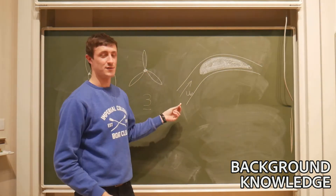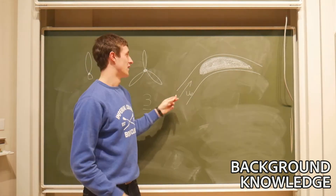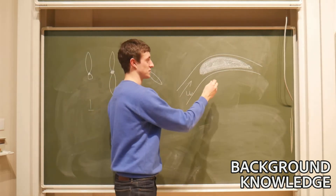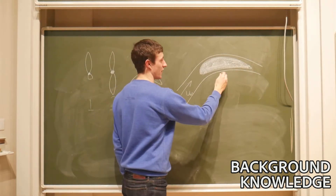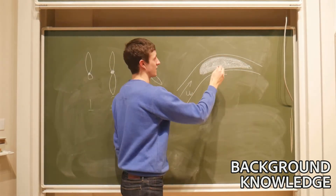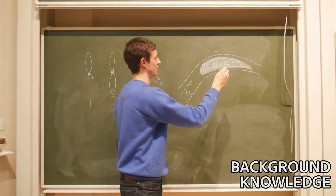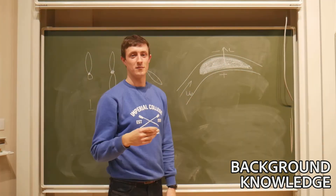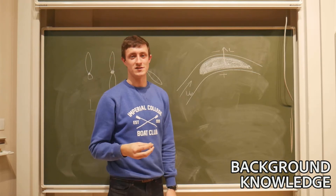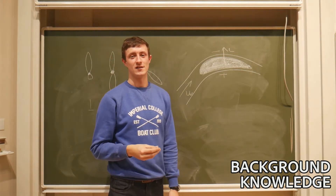Here you can see the free stream approaching this section. It will follow the shape of the section, and in doing this it will produce an area of high pressure below the section and an area of lower pressure above, therefore creating a lift force which can then be made into rotary motion and extracted as power.